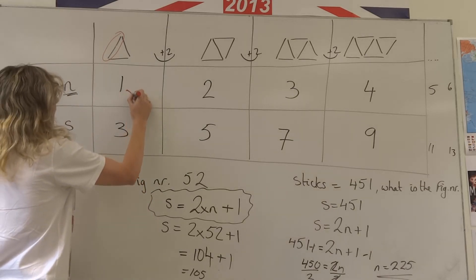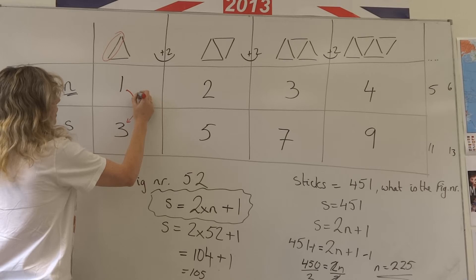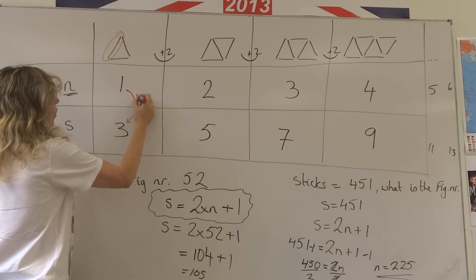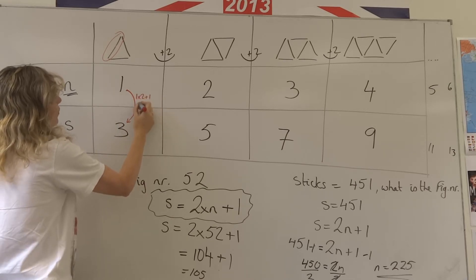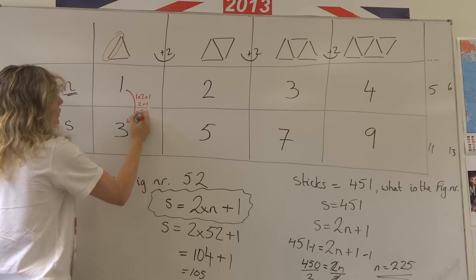If we take the figure number here and use our formula, the figure number is one. One times two plus one would give us two plus one which would equal three.